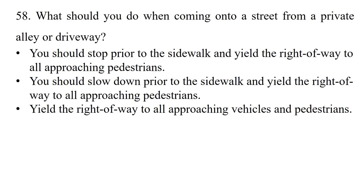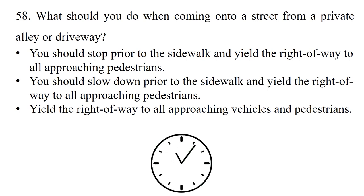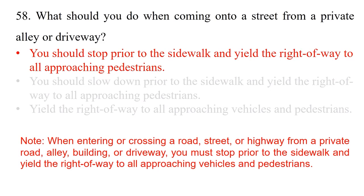Question: What should you do when coming onto a street from a private alley or driveway? Option 1: You should stop prior to the sidewalk and yield the right of way to all approaching pedestrians. Option 2: You should slow down prior to the sidewalk and yield the right of way to all approaching pedestrians. Option 3: Use the right of way to all approaching vehicles and pedestrians. When entering or crossing a road from a private road, alley, building, or driveway, you must stop prior to the sidewalk and yield the right of way to all approaching vehicles and pedestrians.